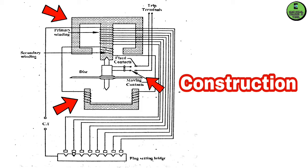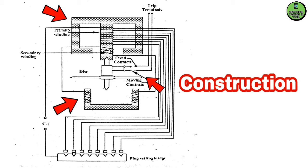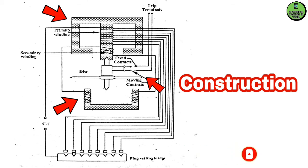The lower electromagnet is connected to the upper electromagnet. You can connect using a plug-setting bridge or connector. The current is connected with the windings in series, so the primary windings will be energized by the current.